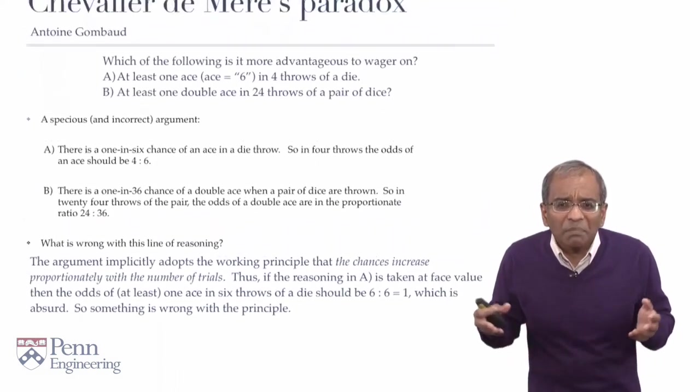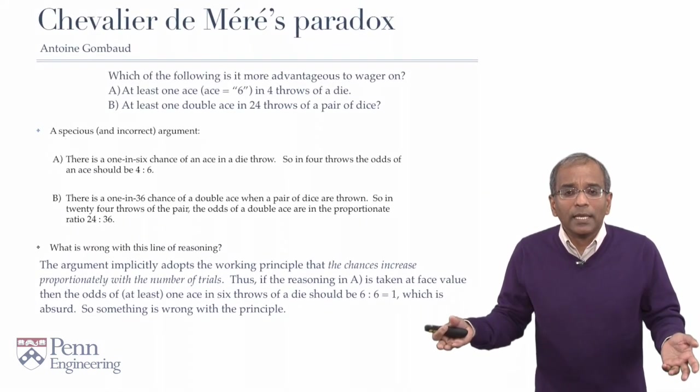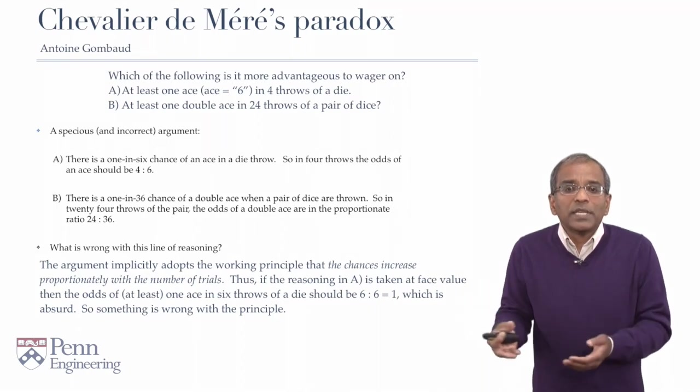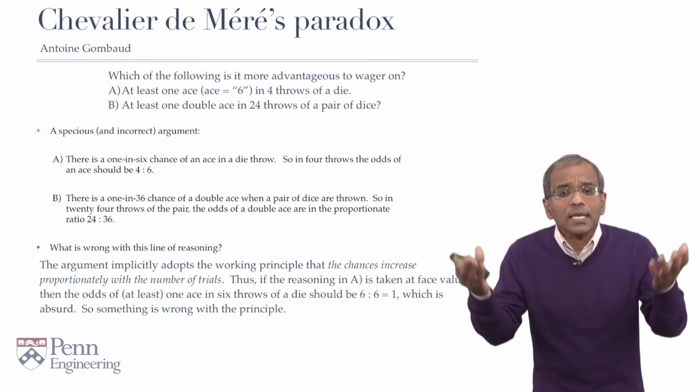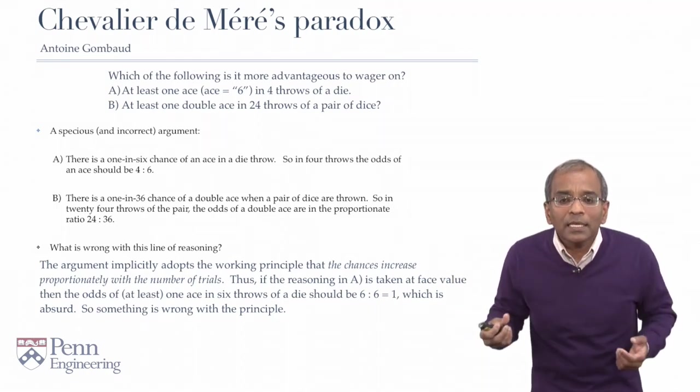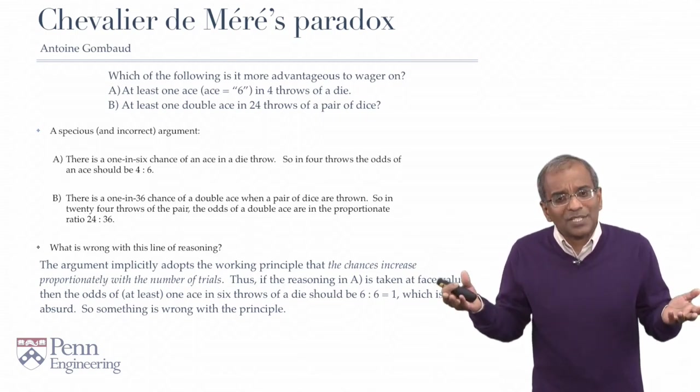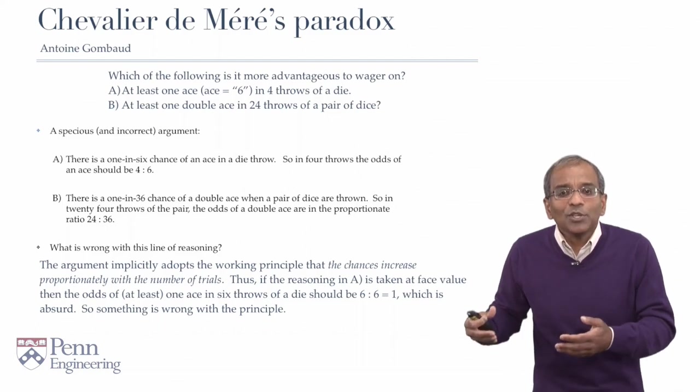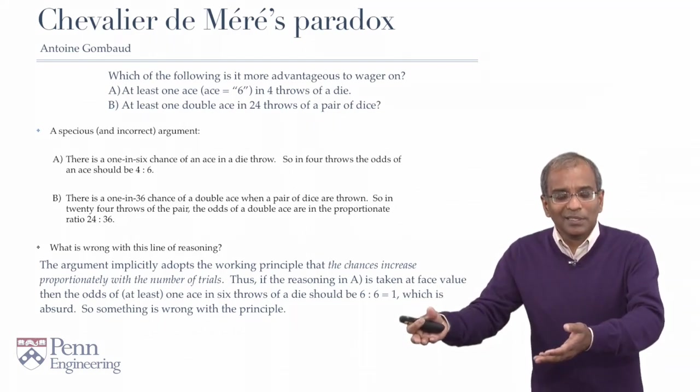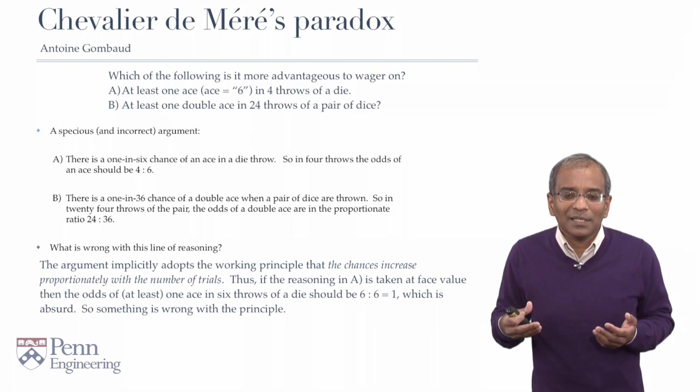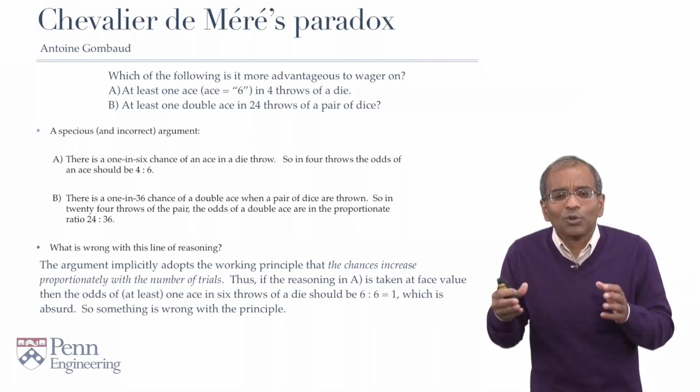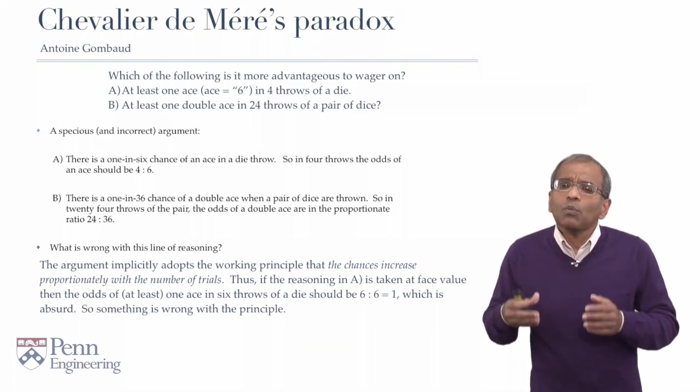But, of course, this is manifestly absurd. In 6 trials, then, the chance of observing an ace should be 6 in 6, or it should be certain that we observe an ace in 6 throws. But this is clearly, patently ridiculous. In fact, if you go beyond 6 throws, it will say you are more than certain that you will observe an ace. Something has clearly gone wrong with the logic. What is it?